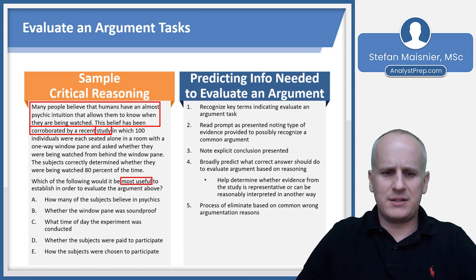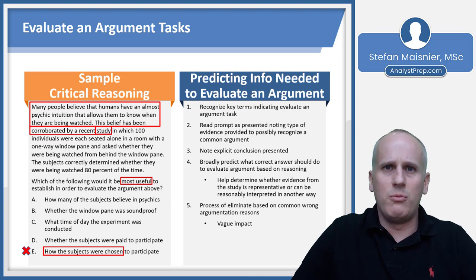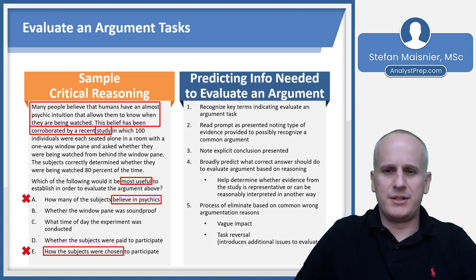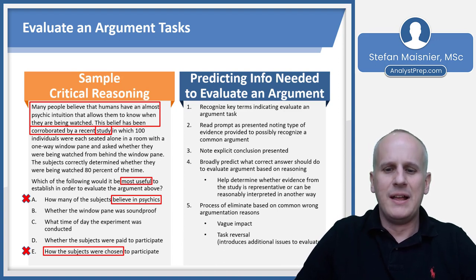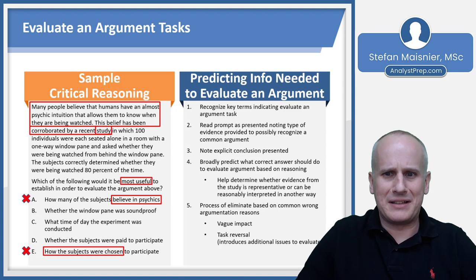We broadly predict what the correct answer should do: find information to help determine whether the evidence from the study is representative or can reasonably be interpreted in another way. Introducing our answer choices, we eliminate for common wrong reasons. Choice E — how the subjects were chosen — is vague with too many different possibilities, so we eliminate it. Choice A — how many subjects believe in psychics — introduces a whole new concept unrelated to the argument, so we eliminate it as a task reversal.